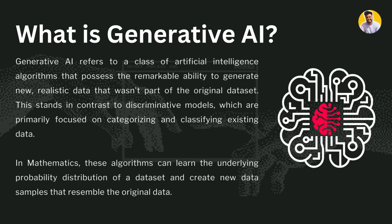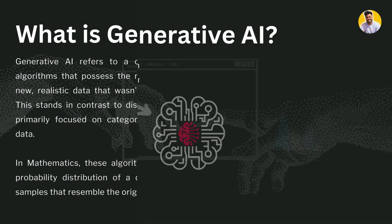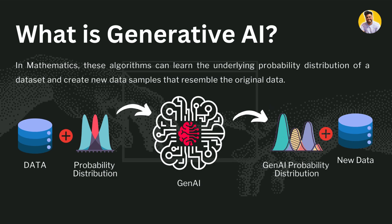So the first question is: what is generative AI? Generative AI refers to a class of artificial intelligence with multiple algorithms that possess the remarkable ability to generate new, realistic data that wasn't part of the original data. This stands in contrast to discriminatory models, which are primarily focused on categorizing and classifying existing data. In mathematical terms, these algorithms can understand the underlying probability distribution of a dataset and create new data that resembles the original.